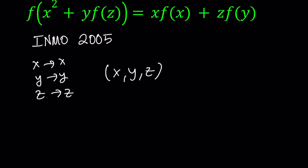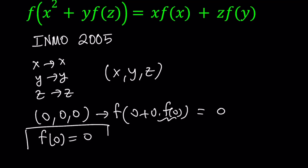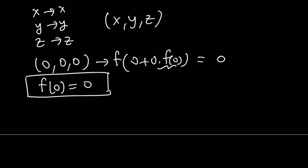Let's start by using (0, 0, 0), meaning replace x with 0, y with 0, and z with 0. This is something you should try first. On the left-hand side, everything inside the parentheses will be 0. Even though I don't know f of 0, I'm going to get f of 0 plus 0 times f of 0, which becomes 0. So this gives us f of 0 equals 0, which is super important. f of 0 is 0 regardless of the values of x, y, z.